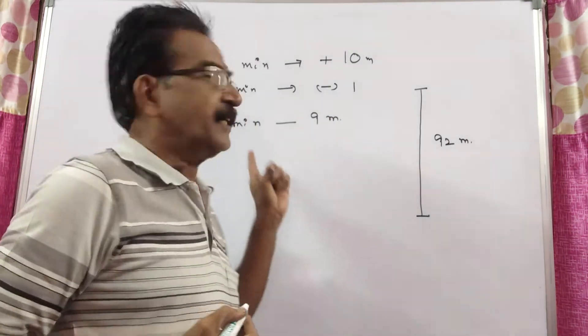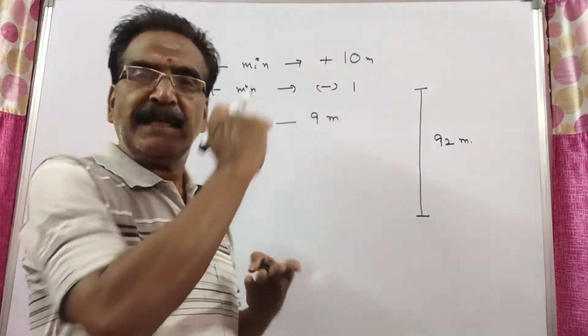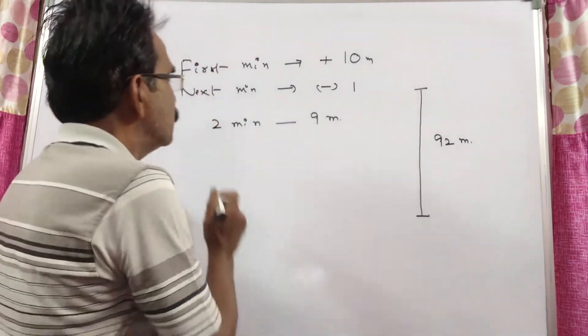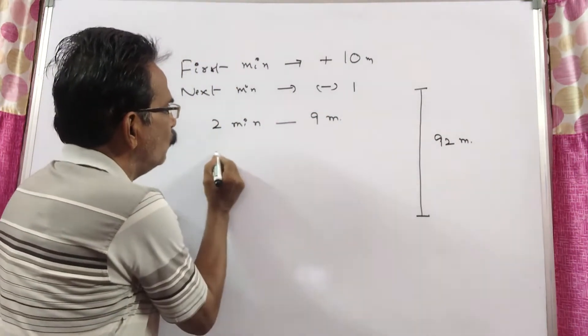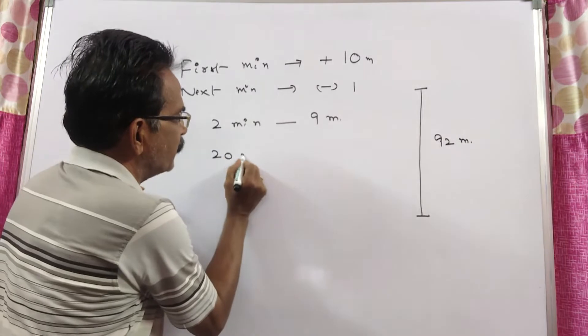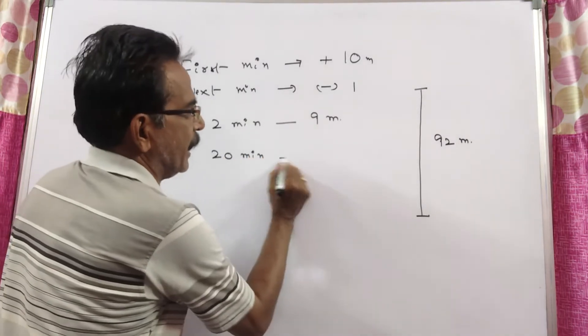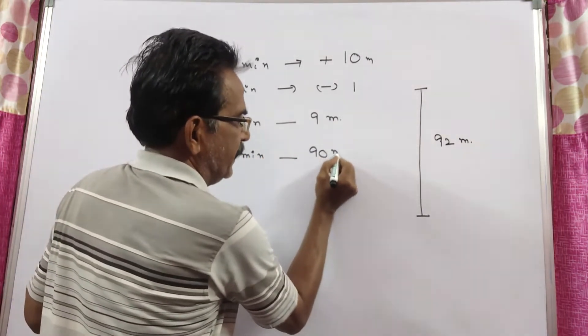In every 2 minutes, it climbs up 9 meters. So, in 20 minutes, it climbs up 10 times 9, which is 90 meters.